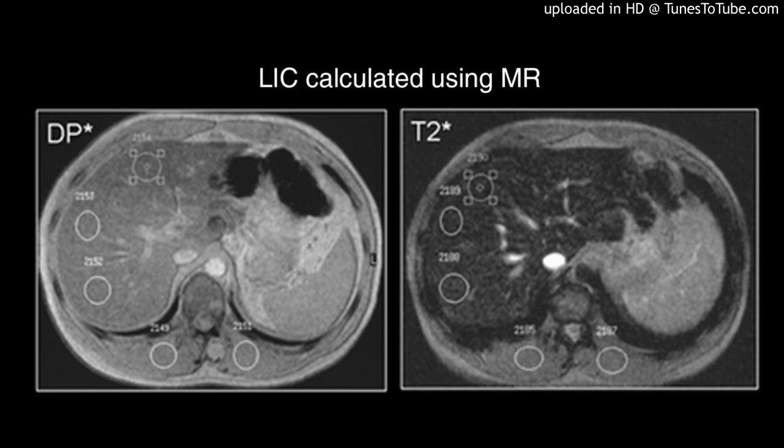The correlation of cardiac and hepatic hemosiderosis as measured by T2 MRI technique with ferritin levels and hemochromatosis gene mutations in Iranian patients with beta-thalassemia major. Authors: Mohamed Soliman Sultanpour and Kambiz Davari.